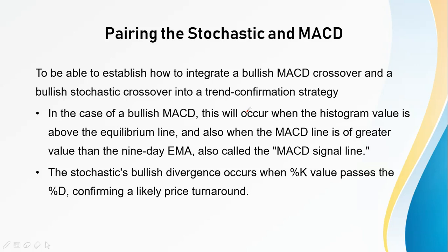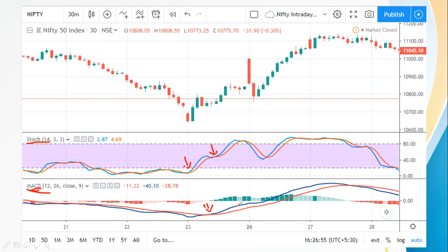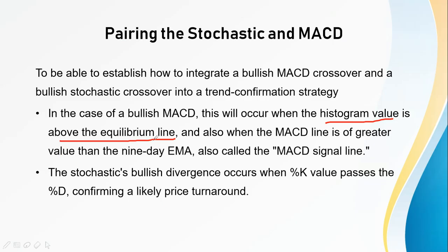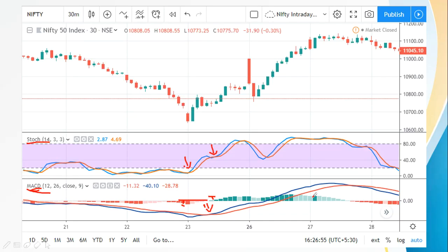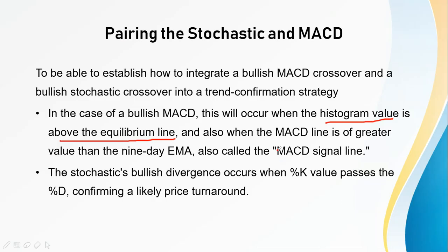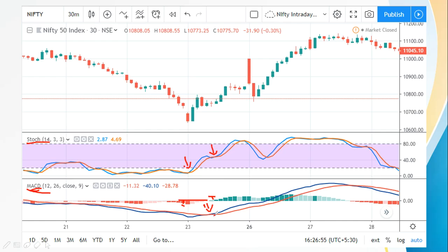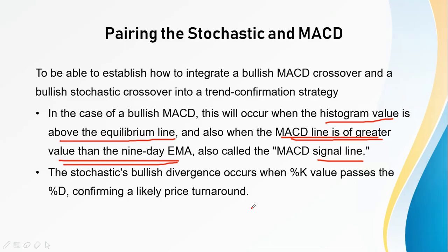To integrate a bullish MACD crossover with a bullish stochastic crossover into a trend confirmation strategy: for a bullish MACD, the histogram value needs to be above the equilibrium line — the green histogram bars indicate bullish movement — and the MACD line must be of greater value than the nine-day exponential moving average, meaning the blue MACD line should be greater than the red signal line.